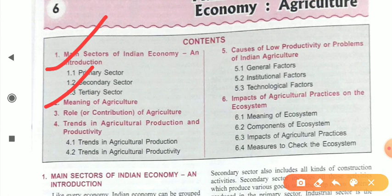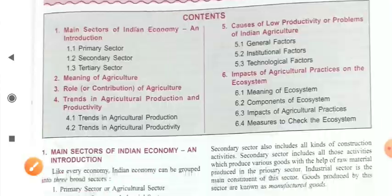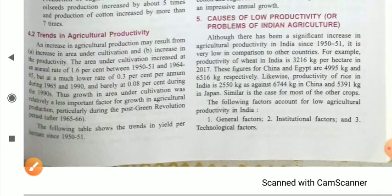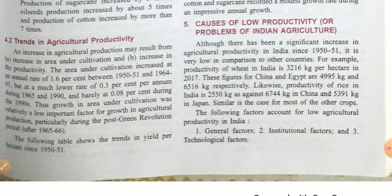Today we will discuss the causes of low productivity and the problems of Indian agriculture. We generally divide this topic into three parts: first, general factors; second, institutional factors; and third, technological factors. So let's start with today's topic.